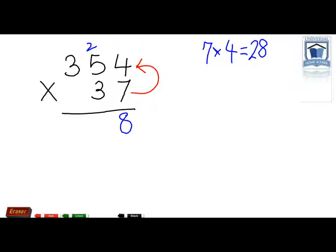The next step, we're going to multiply the 7 times the 5. 7 times 5 equals 35. Don't forget the 2 we carried over. Plus 2 would equal 37. So we put the 7 down below the 3 and we carry the 3.